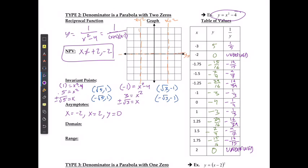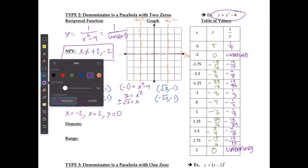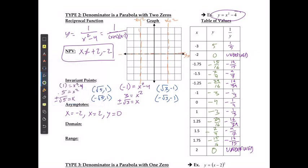One thing that might also help me is I'm going to use my original function to help me see how this is going to look. I know my original function is going to cross through those two x-intercepts. It hits the point of (0, −4), (−1, −3), (1, −3), (−3, 5), and (3, 5). I'm just going to draw this as a dotted line so we can see what the original function looks like.